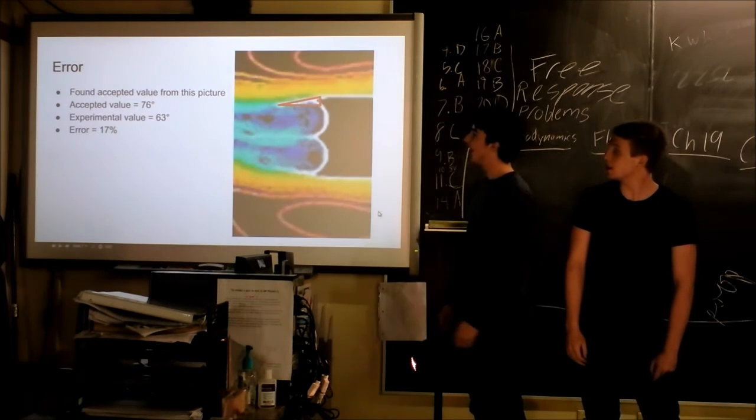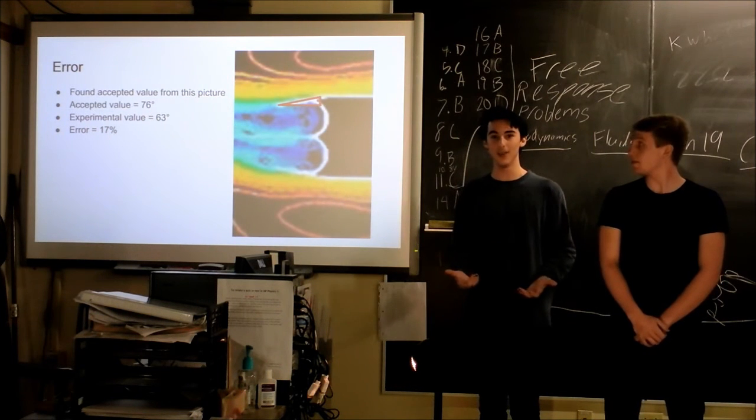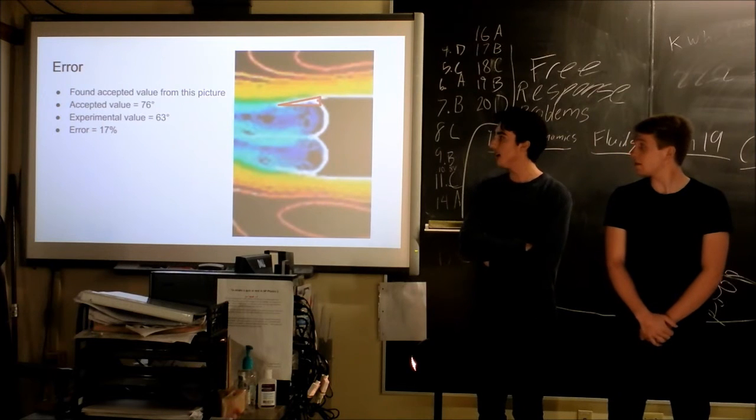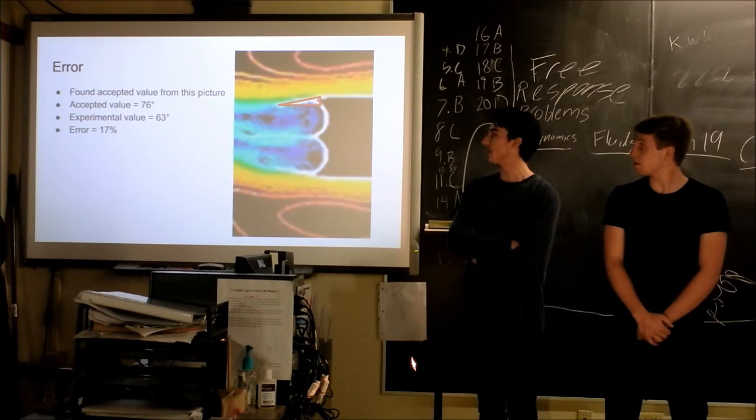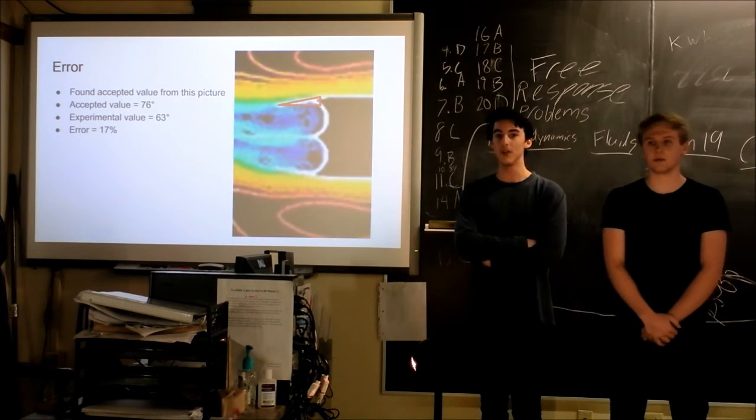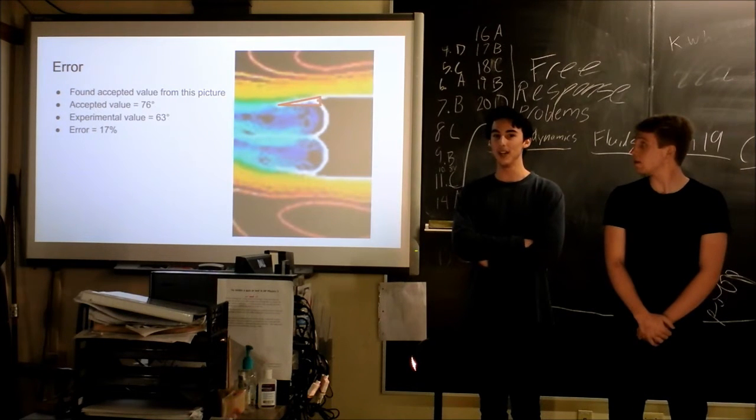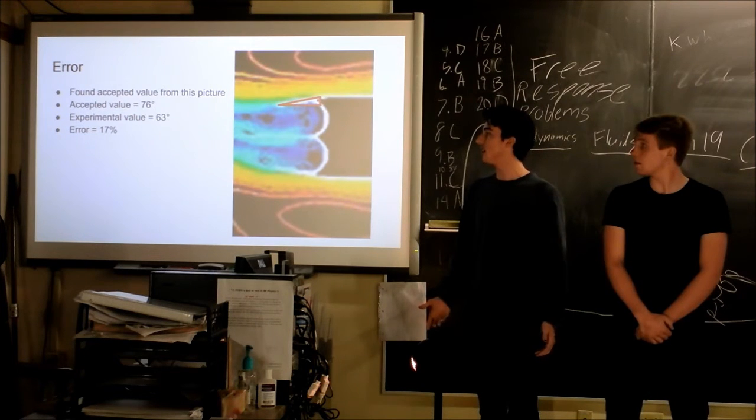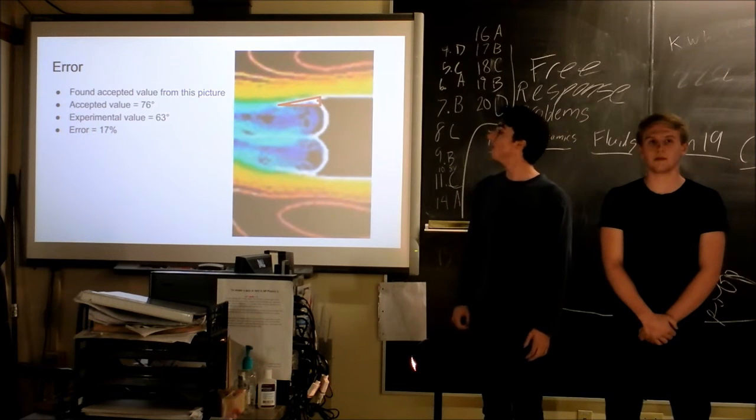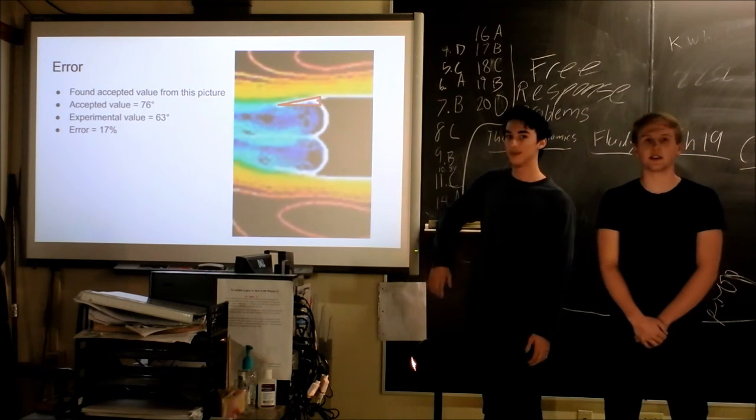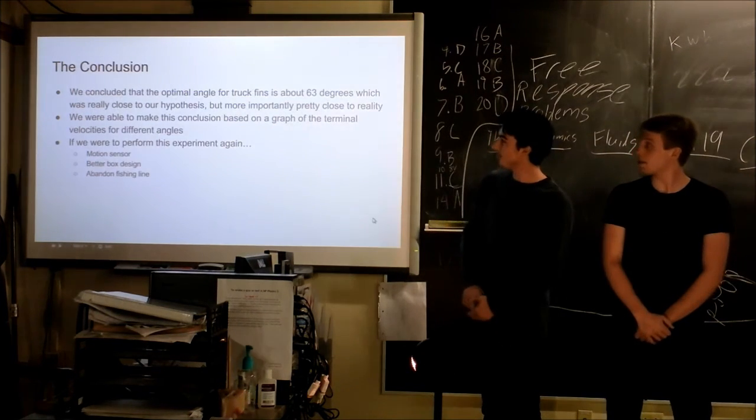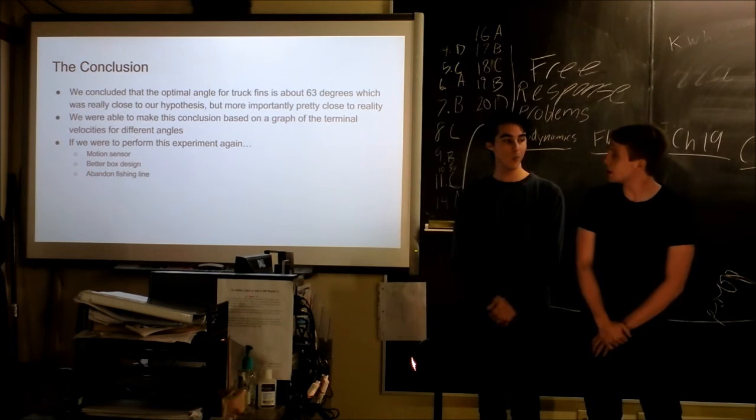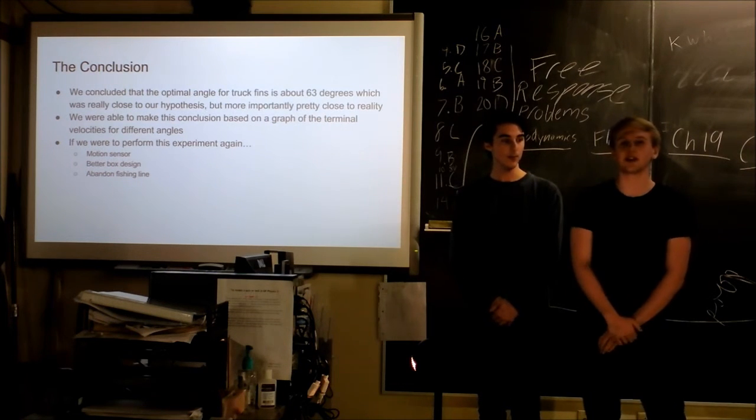Then we did some error calculations. To do the error calculations, we wanted to find an accepted value for the angle of the truck fin, but from all of our research, we couldn't really find one angle that was suggested to be the most optimal on the internet. But we did analyze this picture, and we were able to find the angle that it showed the truck fin being at. Since we assumed this was a demonstration of the truck fins that are actually used, that the science would have found the most optimal angle already, and that would be what is in use. From this, we were able to find that the accepted value would be around 76 degrees, and then because ours was 63, it wasn't that far off. We got an error of 17%. So we were pretty happy with that. And just to clear that up, we did a little trick to find the angle. It wasn't any protractor measuring, but yeah.